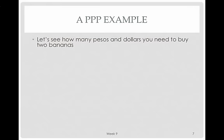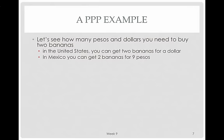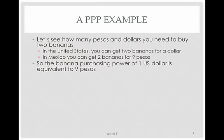Here's an example of how PPP works. Let's see how many pesos and dollars you need to buy two bananas. In the United States you can get two bananas for a dollar. In Mexico you can get two bananas for nine pesos. So the banana purchasing power of one US dollar is equivalent to nine pesos. You're looking at the same good in both countries — what does it cost in the US, and what does it cost in local currency units — and then you use the ratio of those as your conversion factor.